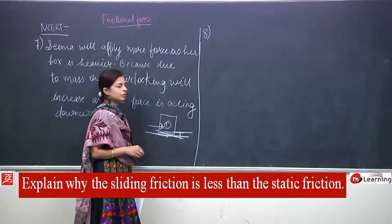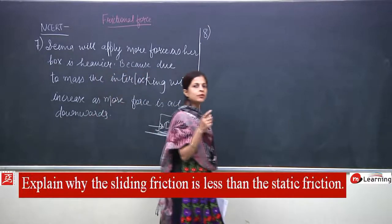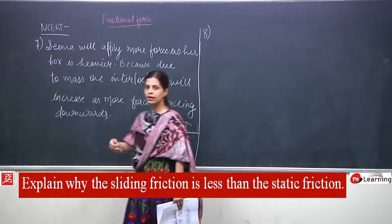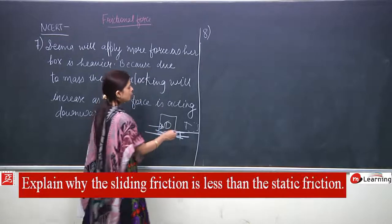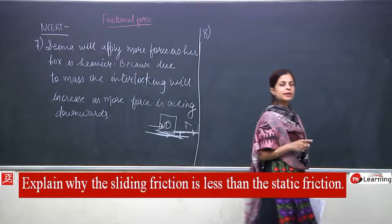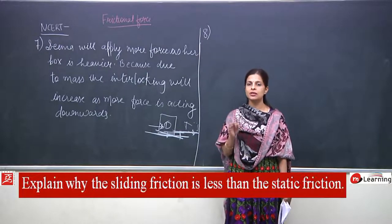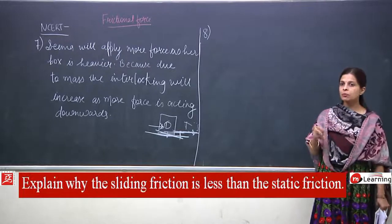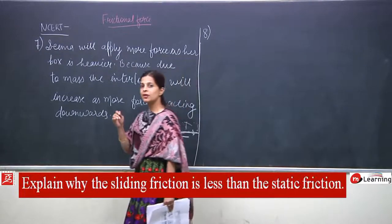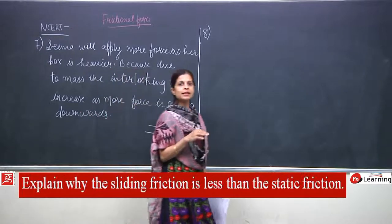When the box is kept on a surface, that is static friction — interlocking is very strong and it is difficult to bring the substance into motion. When the box is moving, that is sliding friction. When moving, the legs are not in contact at one place for longer time. The contacts between hills and valleys keep breaking and reforming, so sliding friction is lesser than static friction.